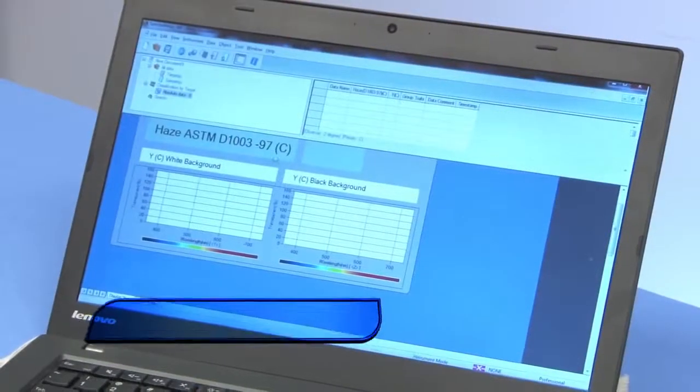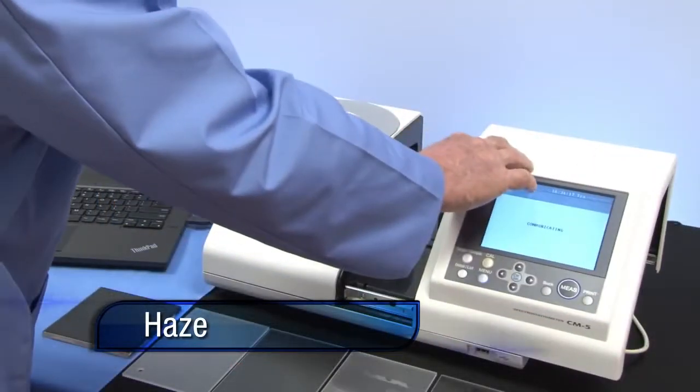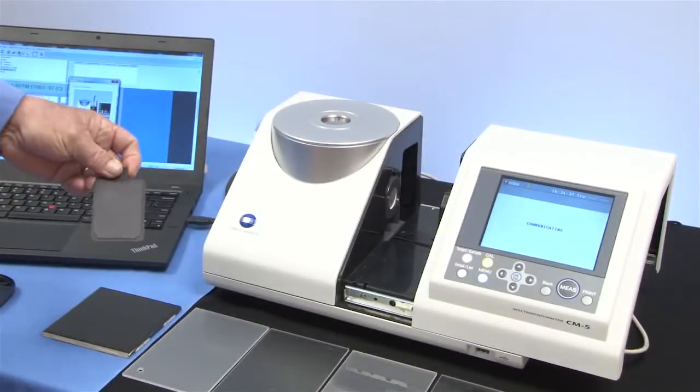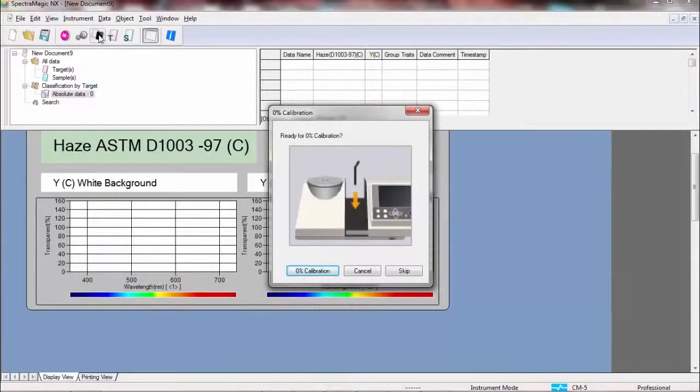For haze measurements, the CM5 is driven by user-friendly Konica Minolta Sensing SpectraMagic NX software. This procedure requires a measurement over a contrasting background.